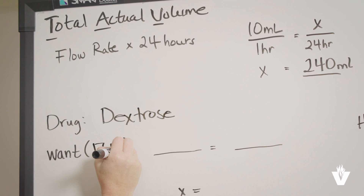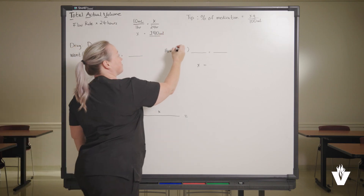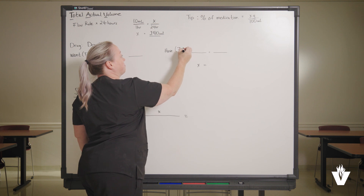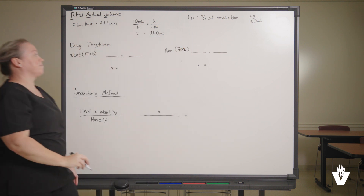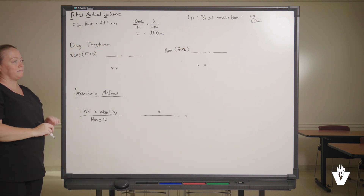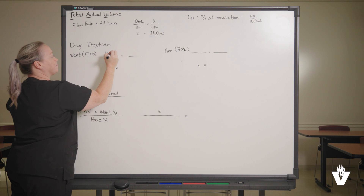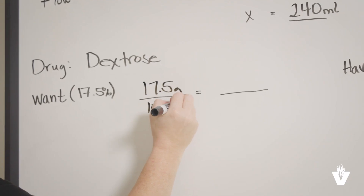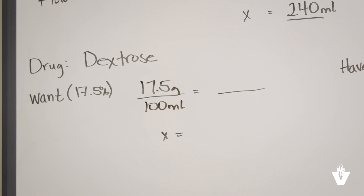Next, we move on to the basis of the solution: dextrose and amino acids. According to the order, we want dextrose 17.5%, but we have 70%. When you have a percentage, that is the number of grams per 100 milliliters. So dextrose 17.5% would look like this when set up for a calculation: 17.5 grams over 100 milliliters.